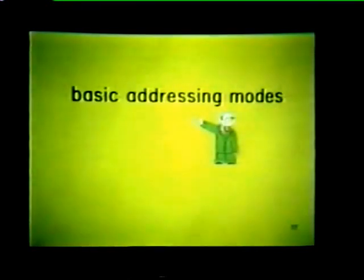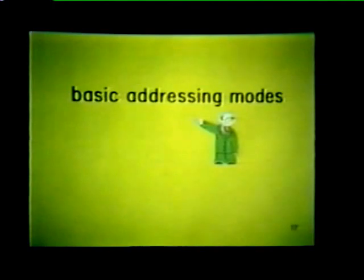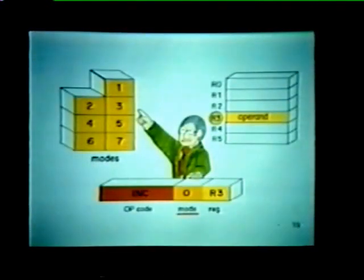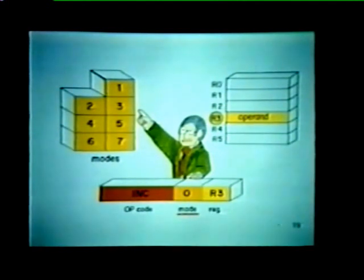Now that we've reviewed some basic concepts, let's describe the eight basic addressing modes. One possible way we can use the general purpose registers is to store the actual data or operands that we wish to modify. This addressing mode provides the quickest access to an operand — since it's already stored in the CPU, there's no need to tie up the bus to retrieve the operand. By placing a zero in the mode field of our instruction word, this designates the first of our eight basic addressing modes. It tells the CPU that the register we've selected — in this case R3 — contains the operand that we wish to modify. The instruction causes the CPU to increment the operand contained in register R3.